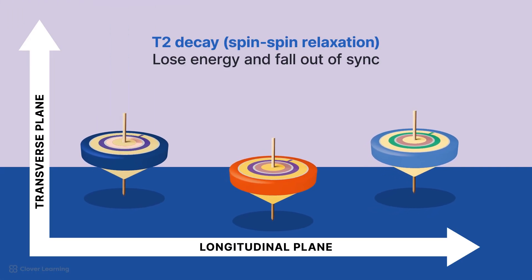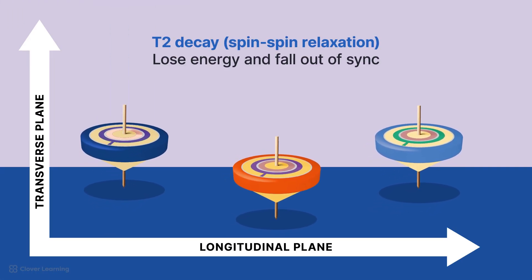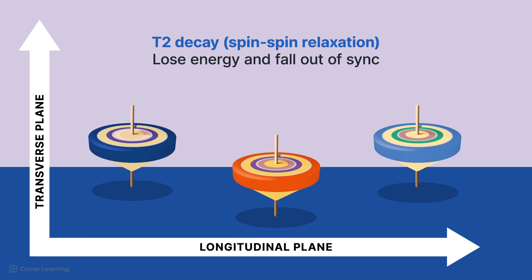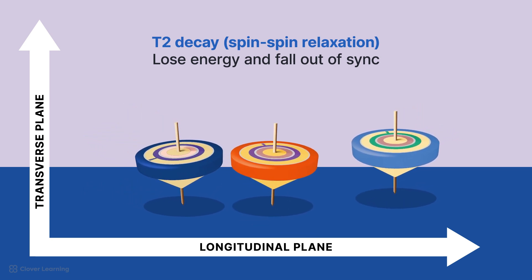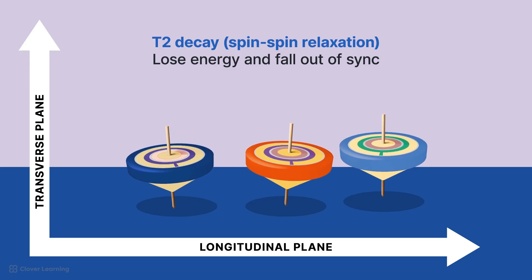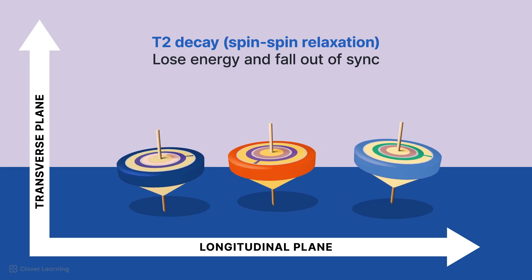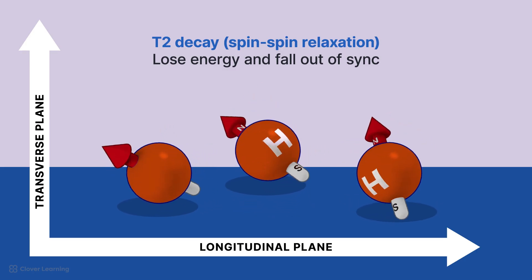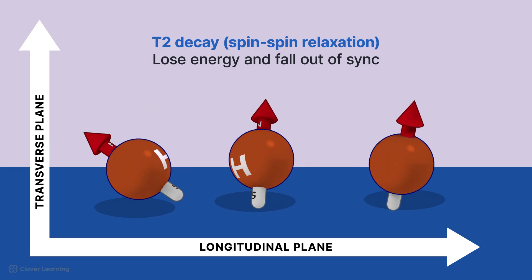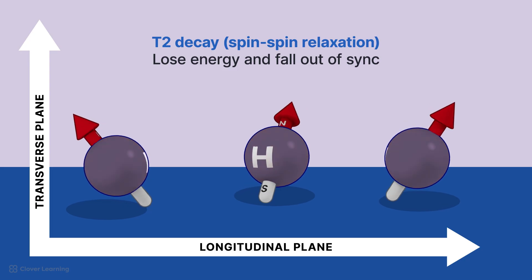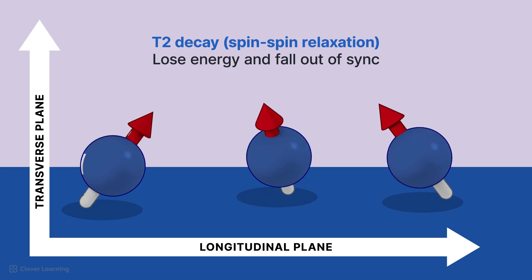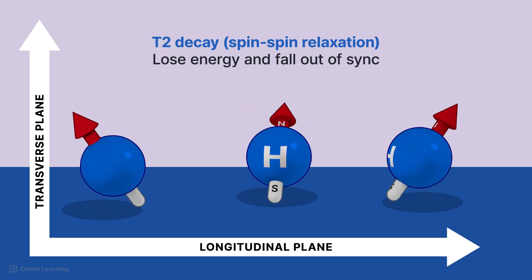The process by which the tops begin bumping into each other and lose the energy you applied and their spins fall out of sync is T2 decay or spin-spin relaxation of the magnetic moments in the hydrogen nuclei. It is determined by their interactions with their neighboring nuclei. As their spins dephase, the lack of coherence causes a reduction in magnetization in the transverse plane, which is why it is called decay.